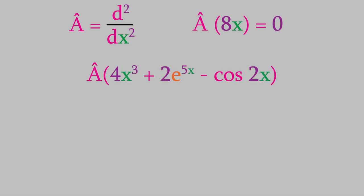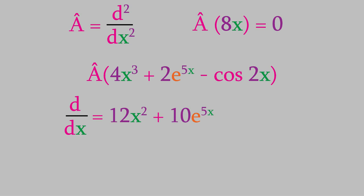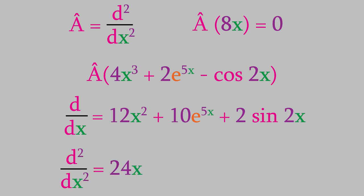Now let's try it on this function, which we saw a little while ago. This one is much trickier. You'll need to draw on your knowledge of calculus in order to solve it, so hopefully you've taken a semester of calculus before you started pchem. Taking the second derivative here is a little bit hard to do in one step, so let's break it into two steps. First, we'll take the first derivative. That gives us 12x squared for the first term, 10e to the 5x power for the next term, and positive 2 sine of 2x for the last term. Now we'll find the second derivative. That gives us 24x for the first term, 50e to the 5x for the middle term, and 4 times the cosine of 2x for the last term.